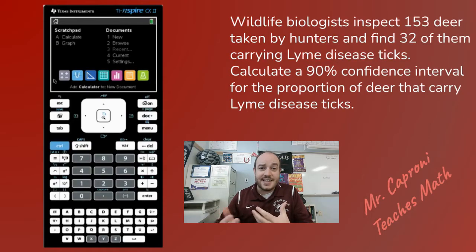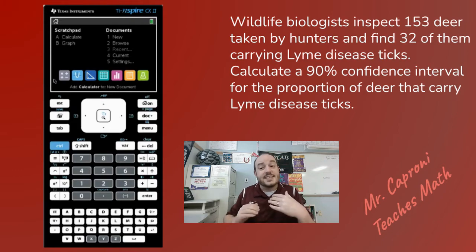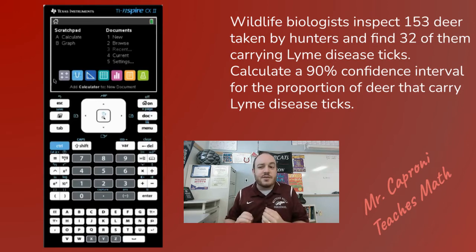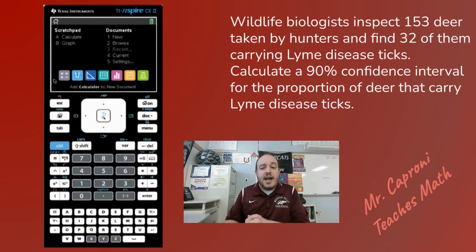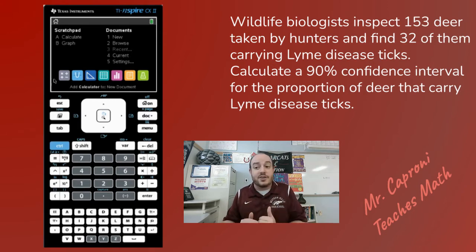Let's go ahead and dive right into the example. A wildlife biologist inspecting 153 deer taken by hunters finds that 32 of them are carrying a Lyme disease tick or multiple ticks. They want you to calculate a 90% confidence interval for the proportion of deer that carried the Lyme disease tick.